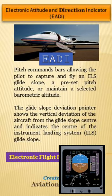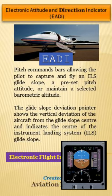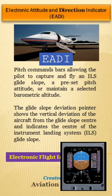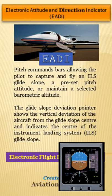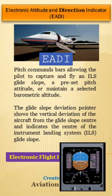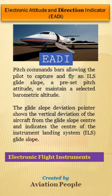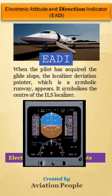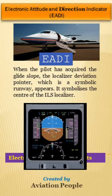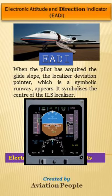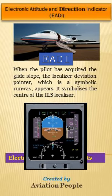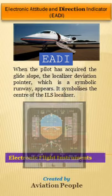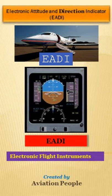The glide slope deviation pointer shows the vertical deviation of the aircraft from the glide slope center and indicates the center of the instrument landing system glide slope. When the pilot has acquired the glide slope, the localizer deviation pointer, which is a symbolic runway, appears. It symbolizes the center of the ILS localizer.